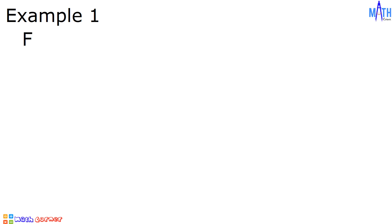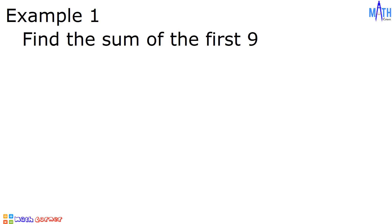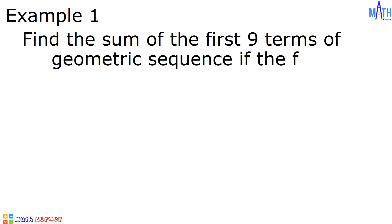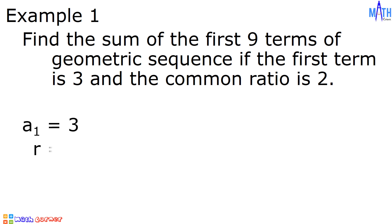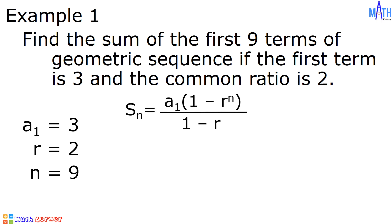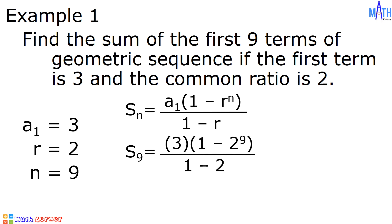Example number 1: let us find the sum of the first 9 terms of a geometric sequence if the first term is 3 and the common ratio is 2. Let us determine all the given values: A sub 1 is equal to 3, r is equal to 2, n is equal to 9. Let us substitute all these values to our formula. S sub n becomes S sub 9 equals 3 times the quantity 1 minus 2 raised to 9, all over 1 minus 2.